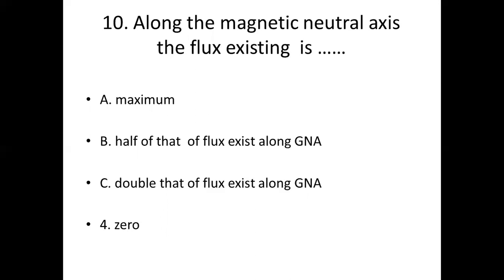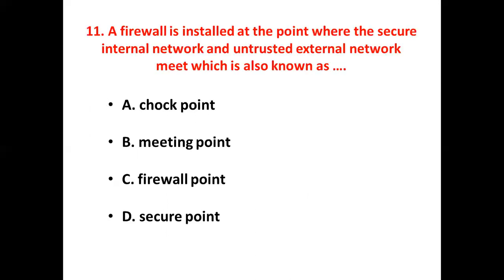Tenth bit: Along the magnetic neutral axis, the flux existing is — Option A: maximum. Option B: half of that of flux along GNA. Option C: double that of flux along GNA. Option D: zero. Answer: Option D, zero.